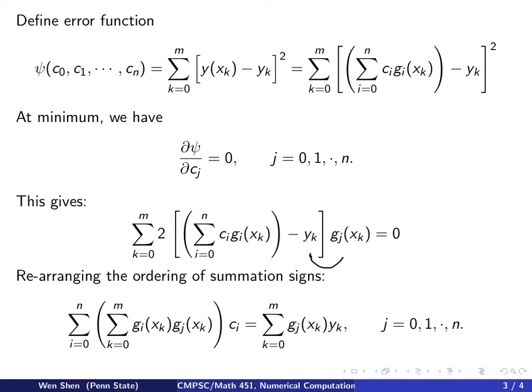The left-hand side becomes a double summation of c_i g_i(x_k) times g_j(x_k). We see that c_i doesn't have anything to do with the index k.